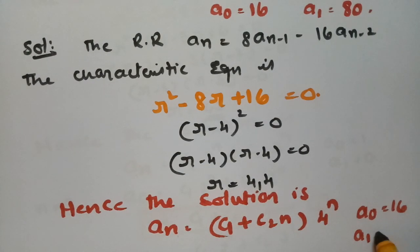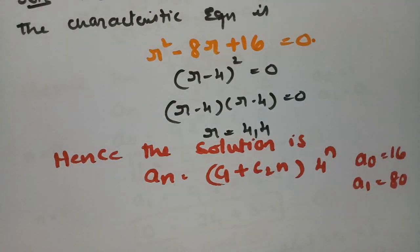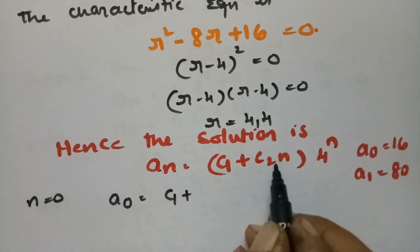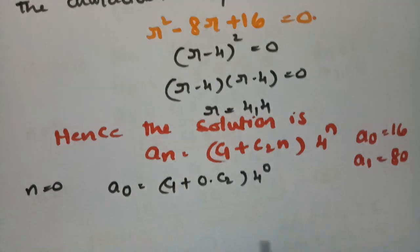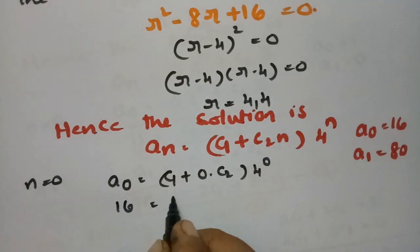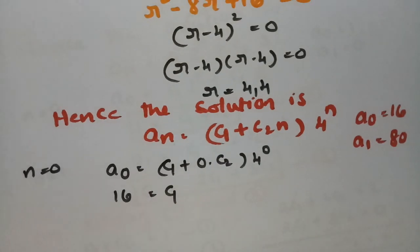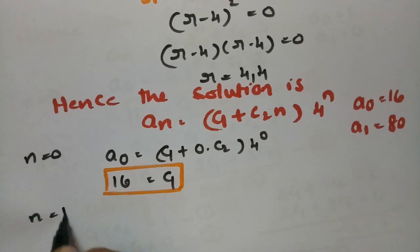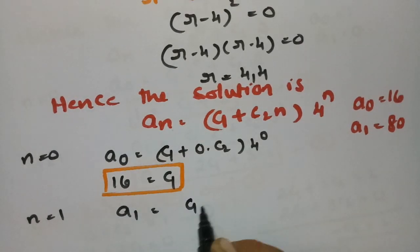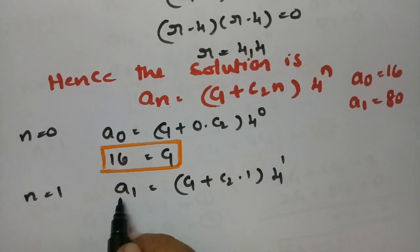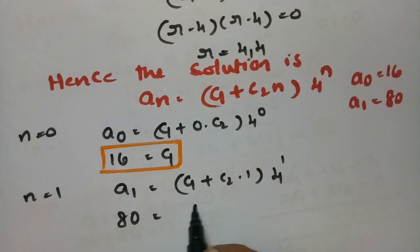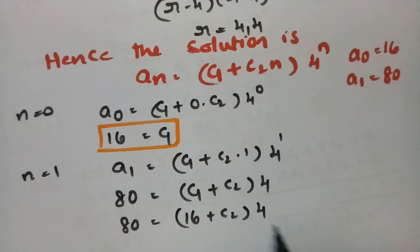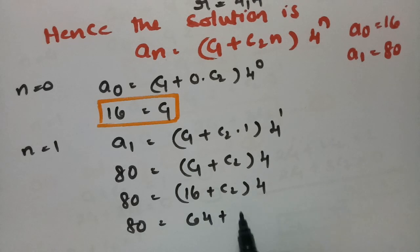The initial conditions are A0 = 16 and A1 = 80. Substituting N = 0: A0 = (C1 + 0·C2)·4⁰ = C1 = 16. So C1 = 16. Substituting N = 1: A1 = (C1 + C2)·4¹ = (16 + C2)·4 = 64 + 4C2 = 80. So 80 - 64 = 4C2, giving 16 = 4C2, thus C2 = 4.